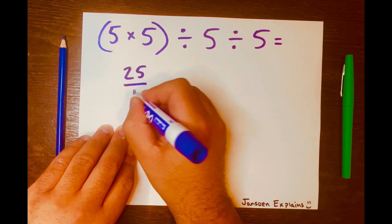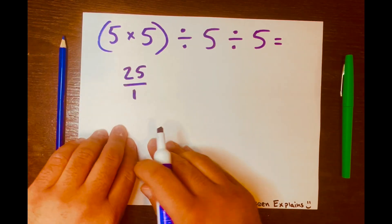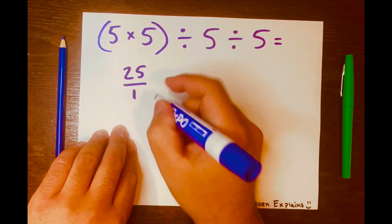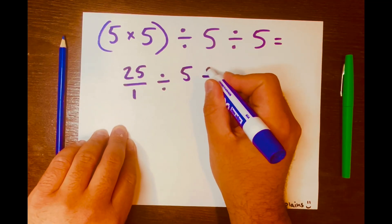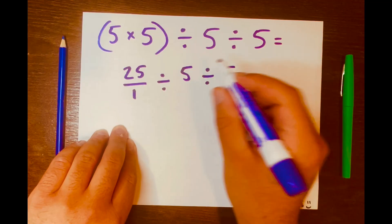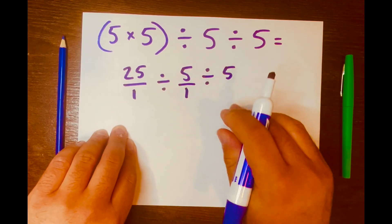And then I bring down the division symbol, the 5, the division symbol and the 5. And I want to turn this 5 into a fraction and I'll leave this 5 alone for now.